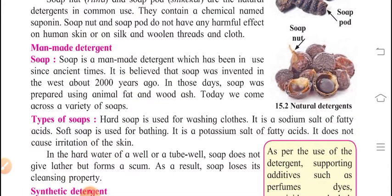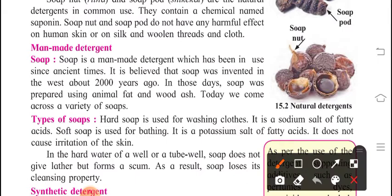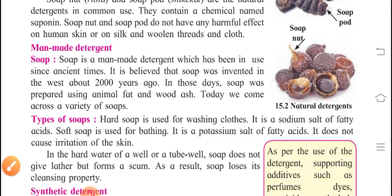Hard soap is used for washing clothes. It is sodium salt of fatty acids. Soft soap is used for bathing. It is potassium salt of fatty acid. Here there is very clear thing. For hard soap, sodium salt of fatty acids and for soft soap, potassium salt of fatty acids. You should have to know about these two things. For hard, we are using sodium salt and for soft, we are using potassium salt. It does not cause irritation of the skin. In the hard water of well or tube well, soap does not give lather but forms a scum. As a result, soap loses its cleansing property.